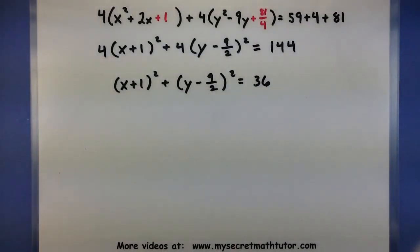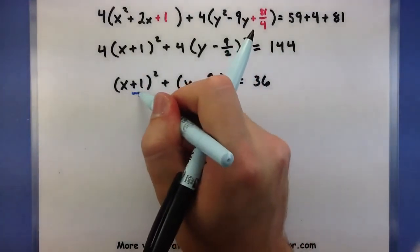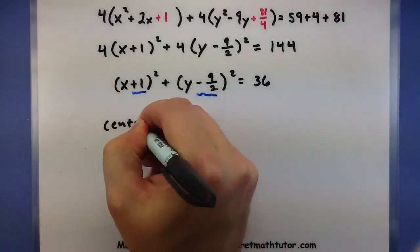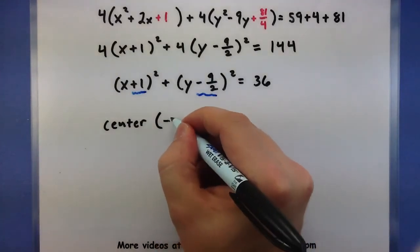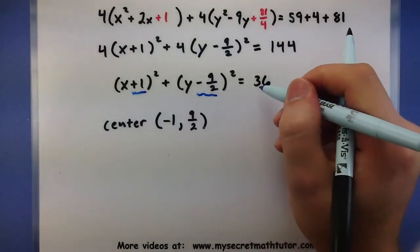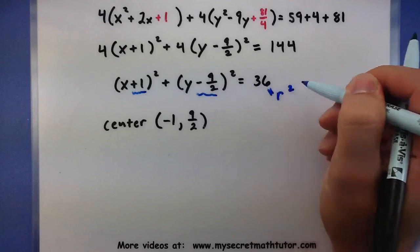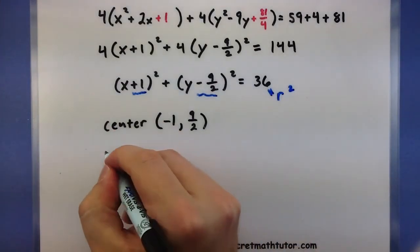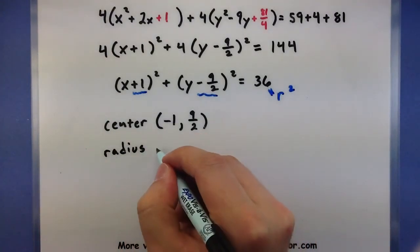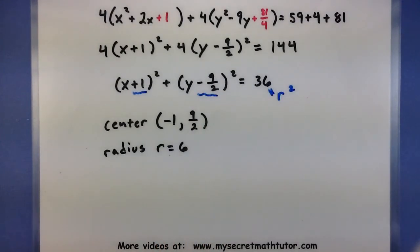Now it's finally in a great form where I can actually figure out what the center and the radius is. To figure out the center, you want to look at your numbers next to x and y. This will give us a center at negative 1 and positive 9 halves. For the radius, that comes from this number, but it's the radius squared that equals 36 — so what number squared gives you 36? The radius is equal to 6. There we can see we've identified the center and the radius, and this problem is all wrapped up.